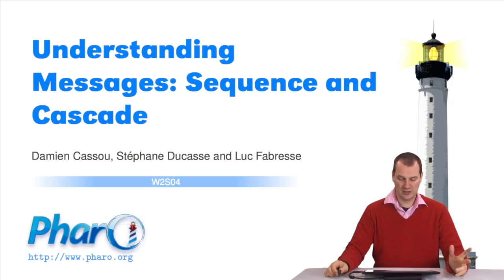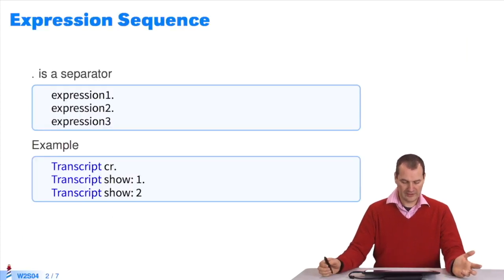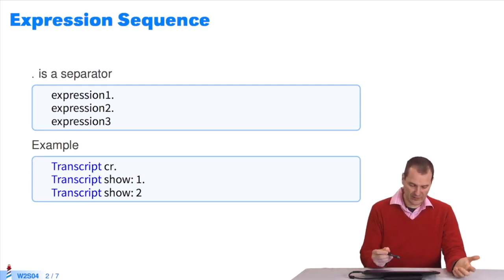In this session, I'll mention two points: sequence and cascade, which are very common in Pharo. There are often several expressions in a row. They must be separated. You do that with a period, as in the example.